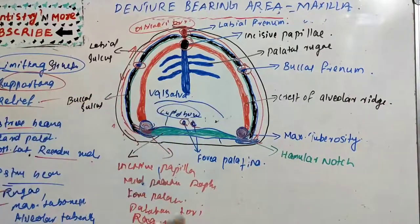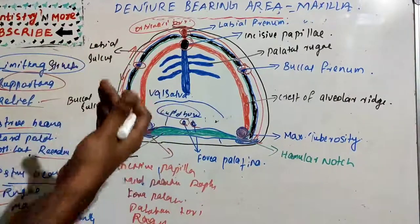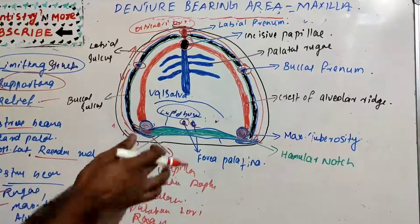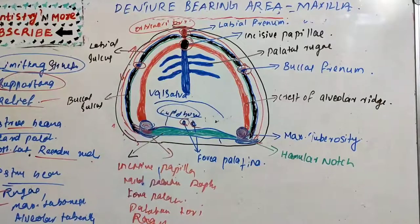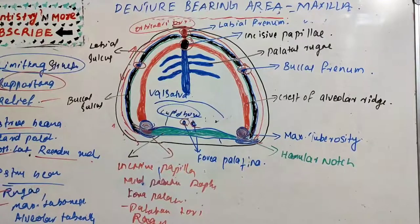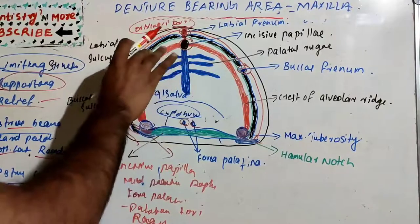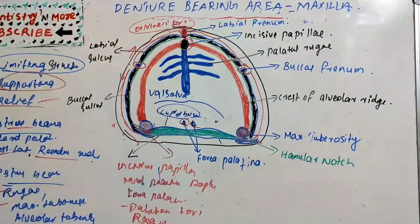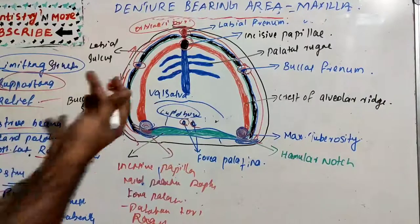The fovea palatine, already discussed for its mucous glands and hydrostatic pressure, also helps in determining the vibrating line. If a palatine torus is present, it should be relieved. The rugae area consists of irregular-shaped ridges in the anterior third of the hard palate and should not be disturbed while taking the impression.